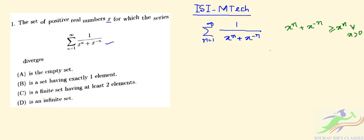If we take the reciprocal, then 1/(x^n + x^(-n)) ≤ 1/x^n for all x > 0. Now if we put the summation on both sides,